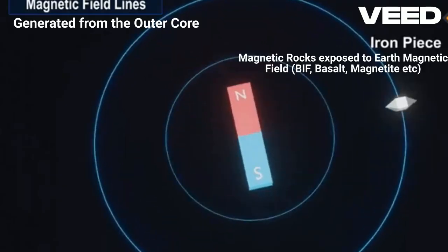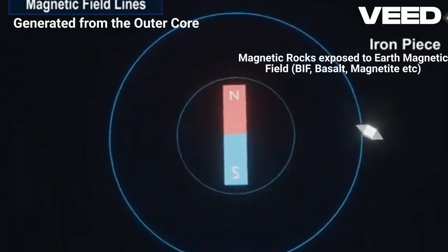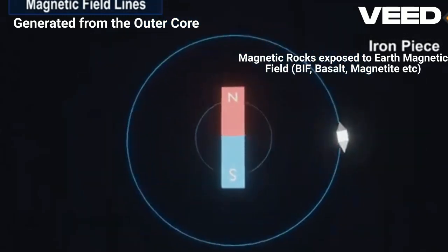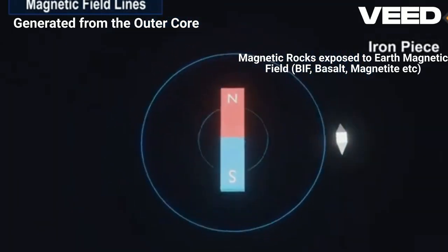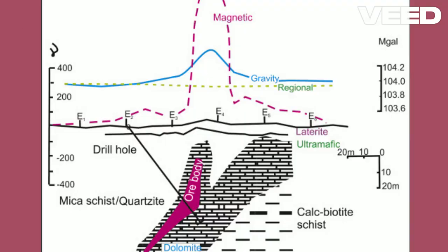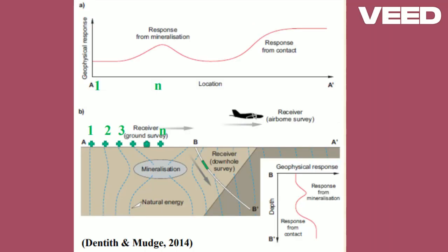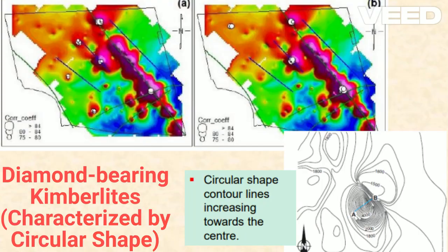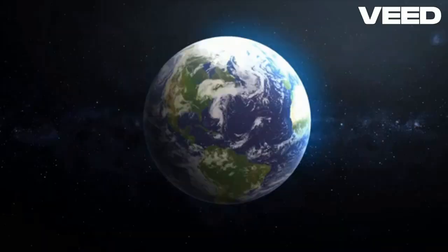The magnetic method utilizes the natural magnetic properties of the Earth. By measuring variations in the magnetic field, geologists can identify subsurface structures and mineral deposits. The magnetic method is a geophysical technique used to detect variations in the Earth's magnetic field. These variations can reveal the presence of different rock types, mineral deposits, and even archaeological artifacts.